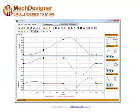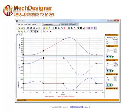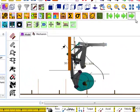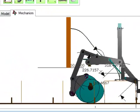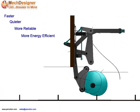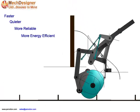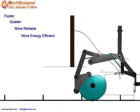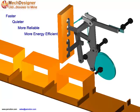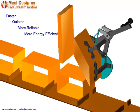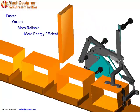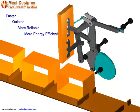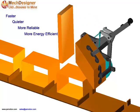We have also added a powerful and comprehensive motion design tool. So with good motion design using MechDesigner, we have improved the throughput of some machines by 50% just by changing the cam and servo motor profiles. We can guarantee that your machines will be faster, quieter, and more reliable if you use good motion design together with MechDesigner.